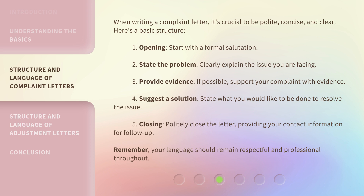When writing a complaint letter, it's crucial to be polite, concise, and clear. Here's a basic structure: 1. Opening — start with a formal salutation. 2. State the problem — clearly explain the issue you are facing. 3. Provide evidence — if possible, support your complaint with evidence. 4. Suggest a solution — state what you would like to be done to resolve the issue. 5. Closing — politely close the letter, providing your contact information for follow-up.